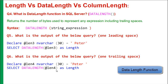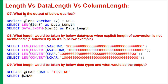The next question is: what is the output of the below query when we have a trailing space and use the length function? The seventh question is: what is the output of the below query when we assign a null value to the variable and use the length function and data length function? The next question is: what is the length returned when we use the convert function without any specified data length — for example, select length of convert of varchar — where I have not specified any length and given 1 followed by 35 zeros?